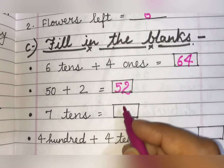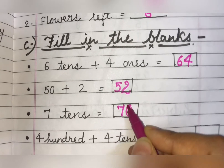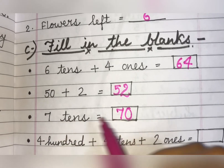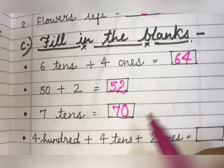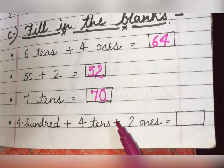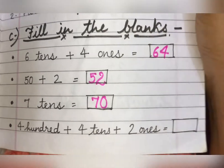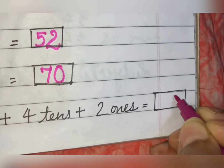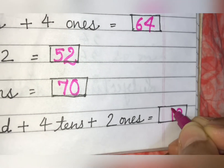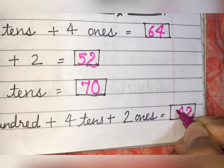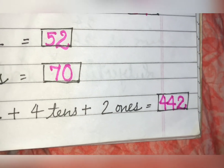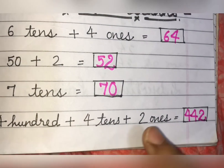Next: 7 tens will be 70. If it were 4 tens it would be 40; 5 tens would be 50; 8 tens would be 80. Now: 400 plus 4 tens plus 2 ones. We write the digits in order — 2 ones, then 4 tens, then 4 hundreds — so the answer is 442.